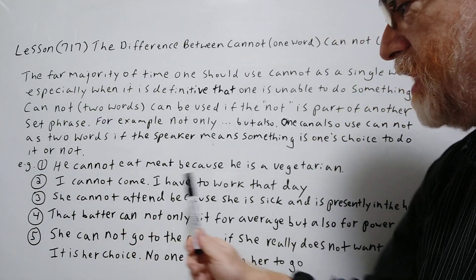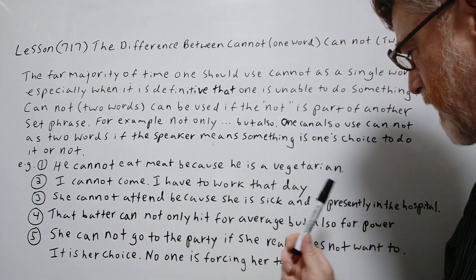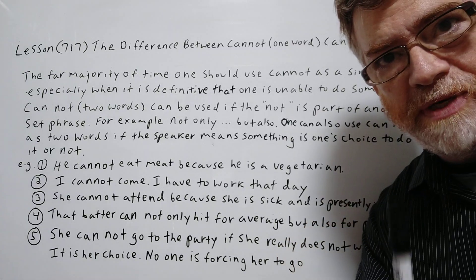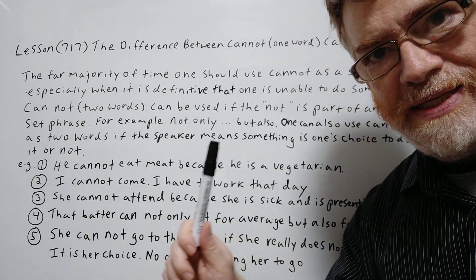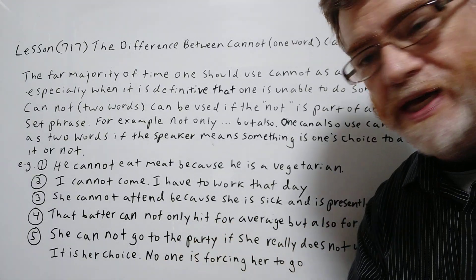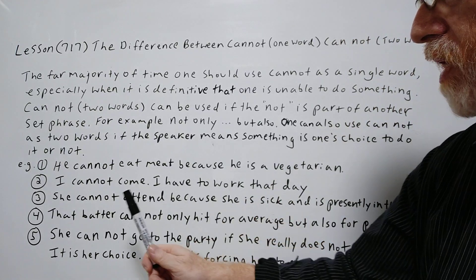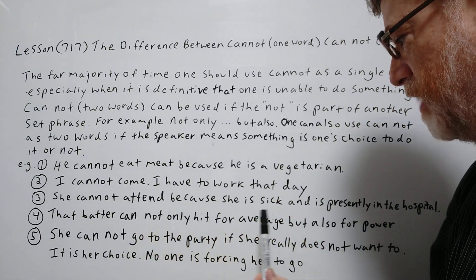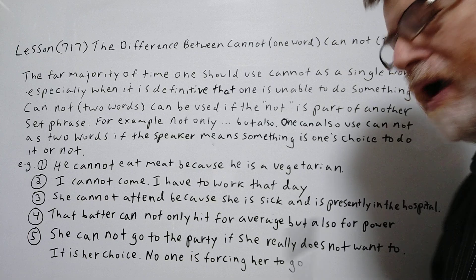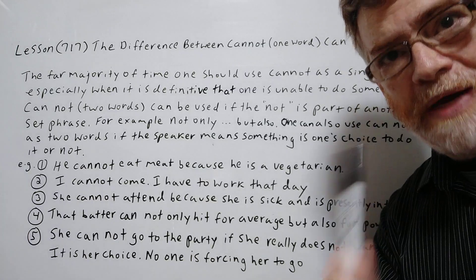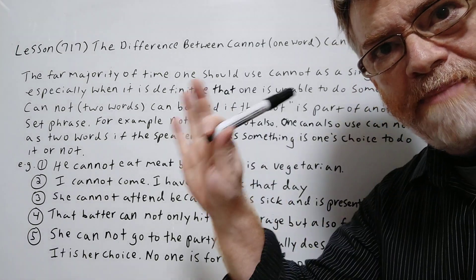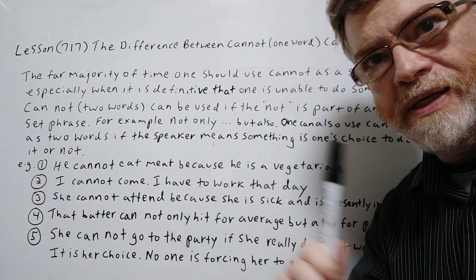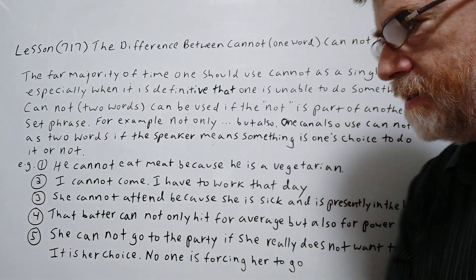Number three: 'She cannot attend because she is sick and is presently in the hospital.' She's ill, so she cannot attend. Number four: 'That batter can not only hit for average but also for power.' This is a baseball example — average means a high batting average, and power means you can hit home runs or extra base hits.